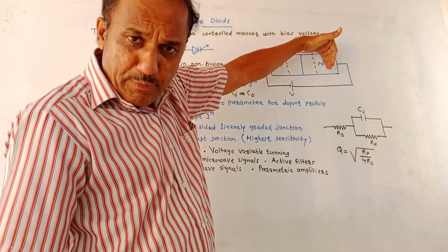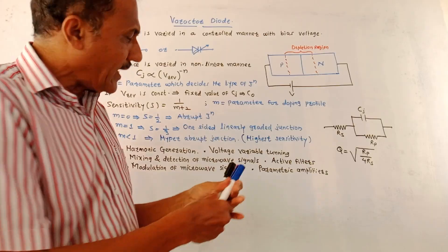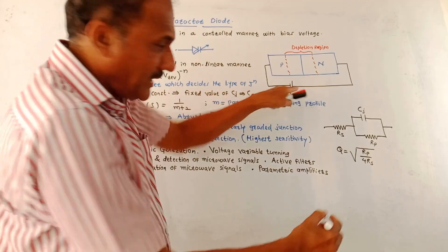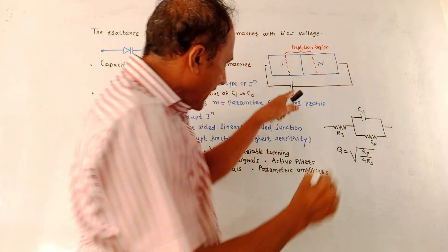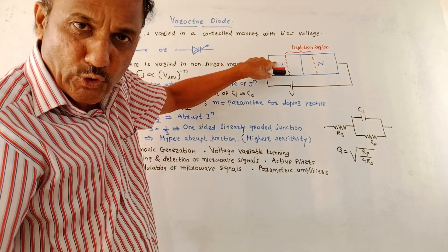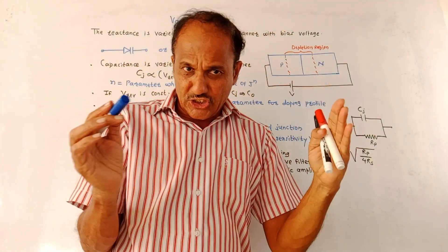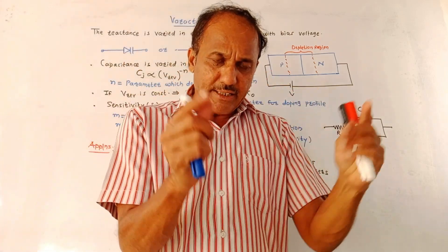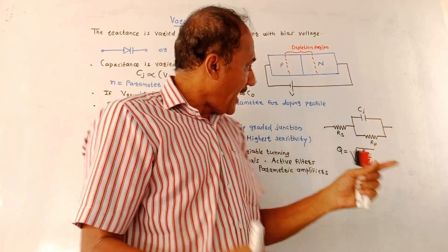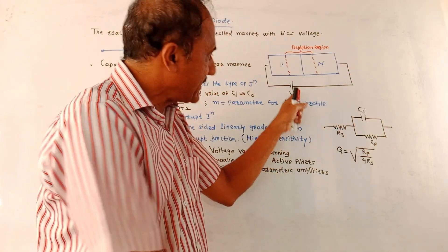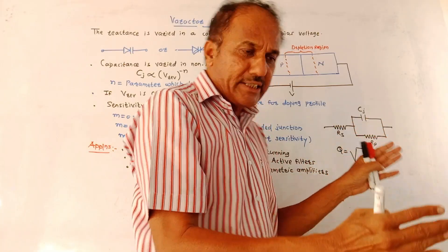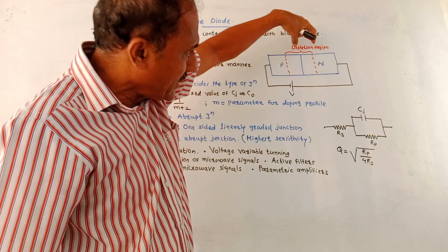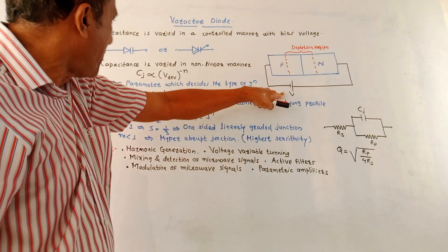This is the constructional details. It is same as the PN junction diode, but it is reverse biased. Look at the diagram. This is negative terminal of voltage source, this is positive terminal. So positive terminal is applied to N side, negative terminal is applied to P side. So this diode is reverse biased. We know that whenever reverse bias is applied, then in case of a diode, depletion region is formed. As you go on increasing this reverse bias, width of depletion region goes on increasing. So between P and N region at the junction, the depletion region is formed because of this applied reverse bias.